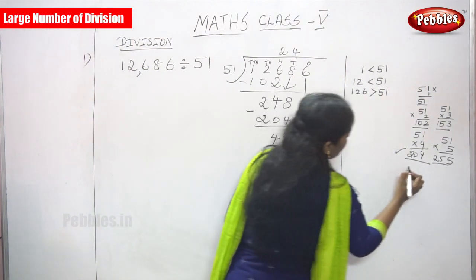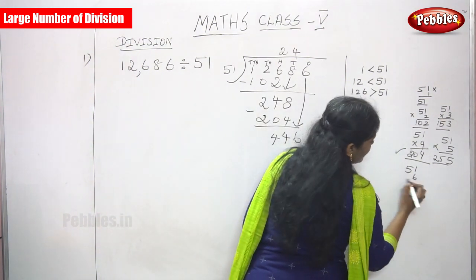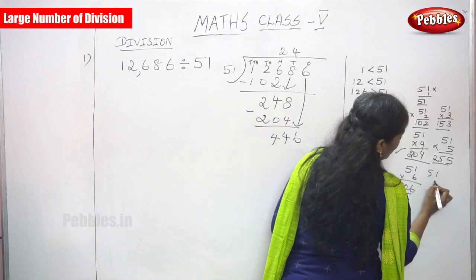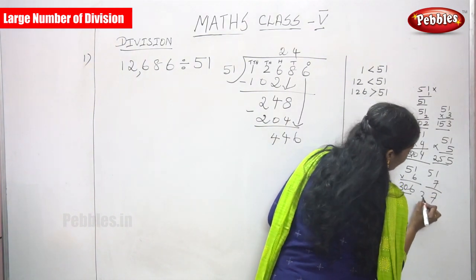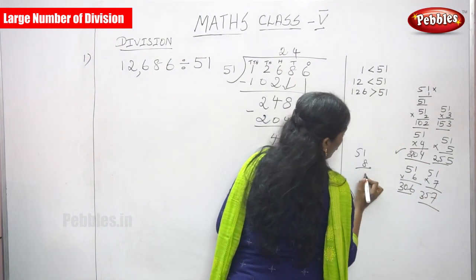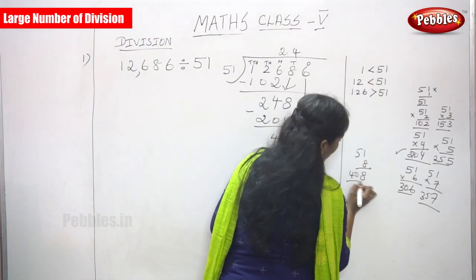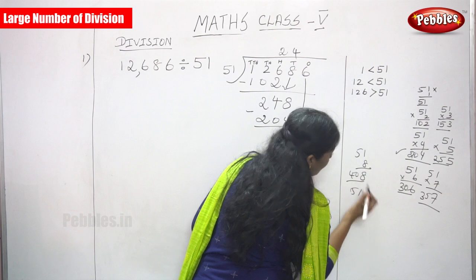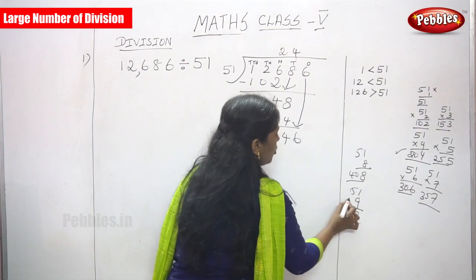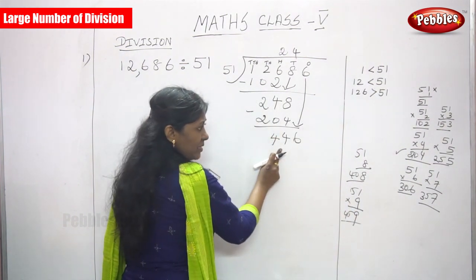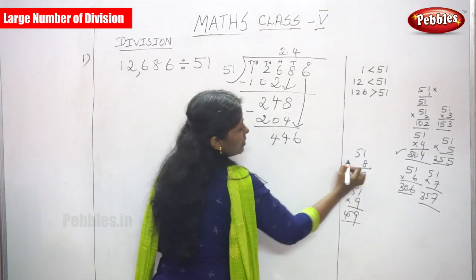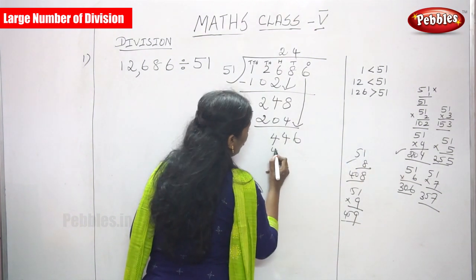Now find how many times 51 goes into 446. Try 51 × 6 = 306 — too small. 51 × 7: 1 seven is 7 and 5 sevens are 35, giving 357 — still less. 51 × 8: 1 eight is 8 and 5 eights are 40, giving 408. 51 × 9: 1 nine is 9 and 5 nines are 45, giving 459 — greater than 446. So 8 is the right choice. Write 8, giving 51 × 8 = 408.